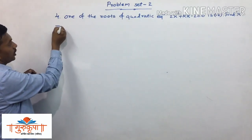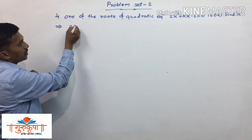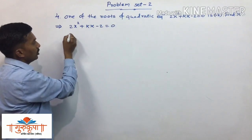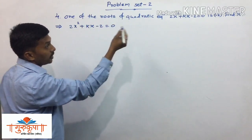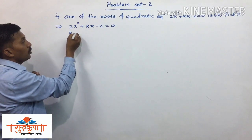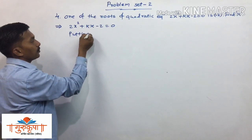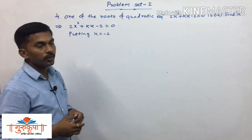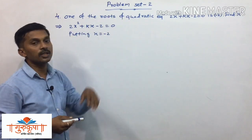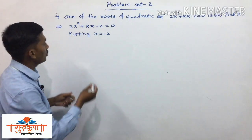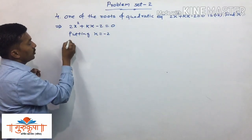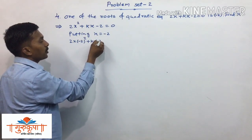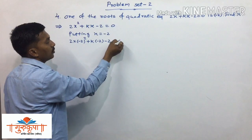We write the given quadratic equation as it is: 2x squared plus kx minus 2 equals 0. Since one root is minus 2, putting x equal to minus 2, we get: 2 multiplied by the square of minus 2, plus k multiplied by minus 2, minus 2, equals 0.